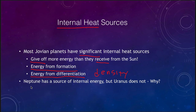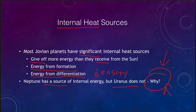Uranus and Neptune are more confusing. Neptune does have some source of internal energy — we can measure that it gives off more than it could possibly receive from the sun — but Uranus does not. The big question is why. Why does Neptune have a source of internal energy and Uranus does not? That is something that still has to be studied.